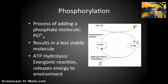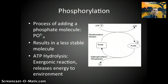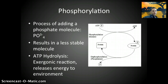During the process of cellular respiration, phosphorylation occurs in a number of different steps. This is the process of adding a phosphate molecule to another molecule, which results in a less stable molecule. ATP stands for adenosine triphosphate — a molecule with three phosphates on it. ADP has two phosphates attached. ATP is rather unstable and releases a phosphate to provide energy — that's the energy cells use to do work. ATP hydrolysis is an exergonic reaction, meaning it releases energy into the environment when it releases that phosphate.